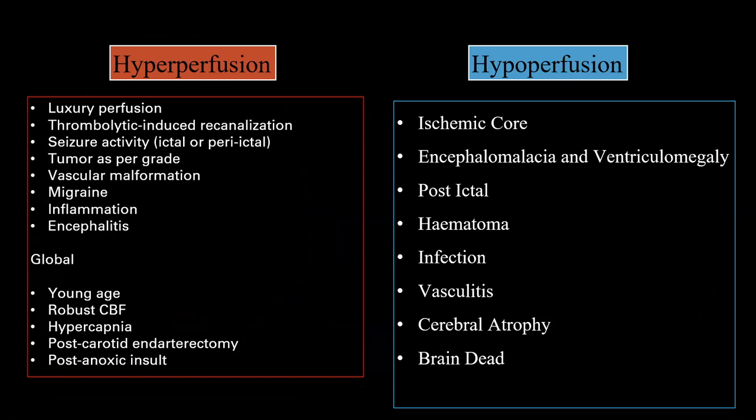To summarize, all these pathologies involving differential perfusion benefit from ASL. Conditions with hyperperfusion include: luxury perfusion in infarcts, thrombolytic-induced recanalization, post-ictal state (sometimes), tumors by grade, vascular malformations such as AV fistula, migraine, inflammation, and viral encephalitis. Conditions with hypoperfusion include: ischemic core, encephalomalacia, post-ictal state (most commonly), hematoma, infections, vasculitis, cerebral atrophy, and brain-dead patients.